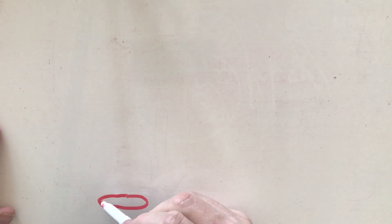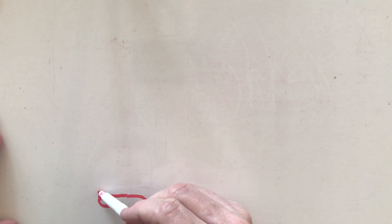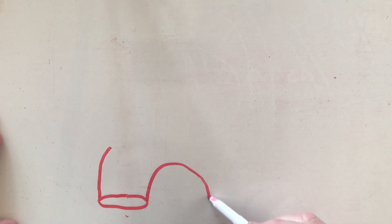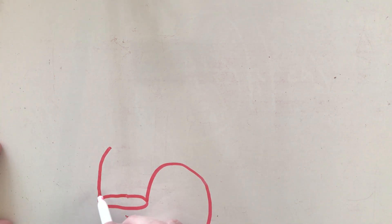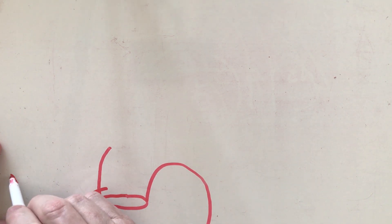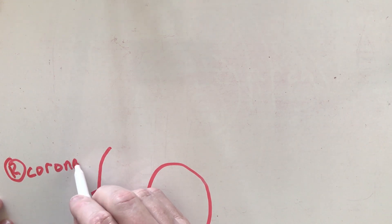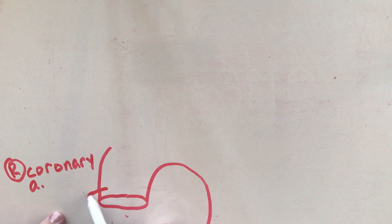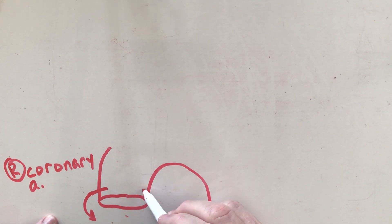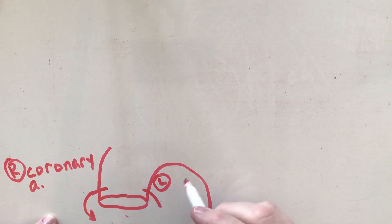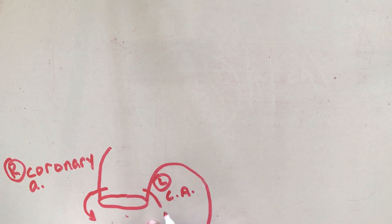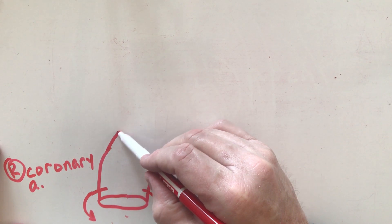The aortic arch — imagine I've removed it from the heart and we go around like this. The first thing coming off the aorta is the right coronary artery, and the coronary artery goes right back to the heart to give it blood. Over here I'm going to have my left coronary artery.